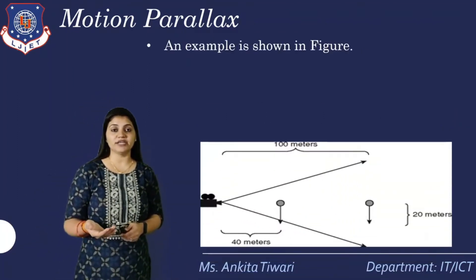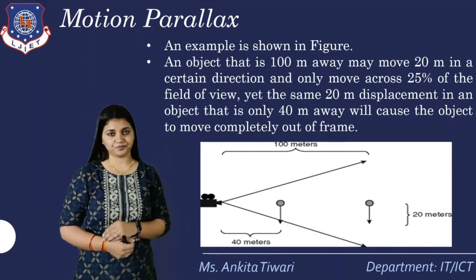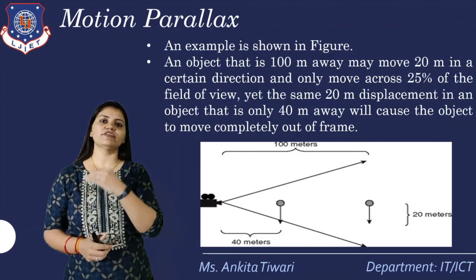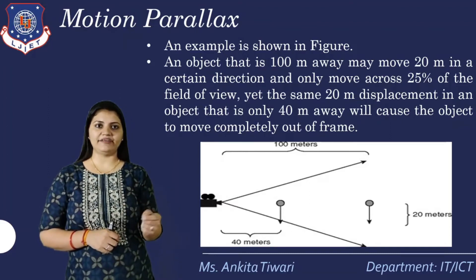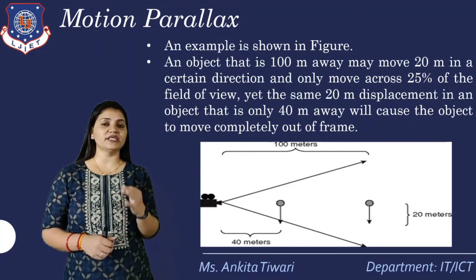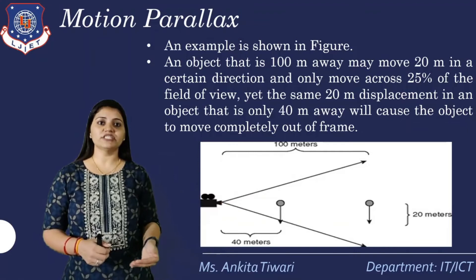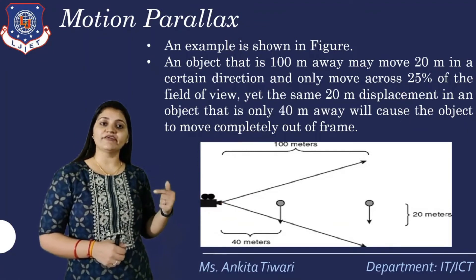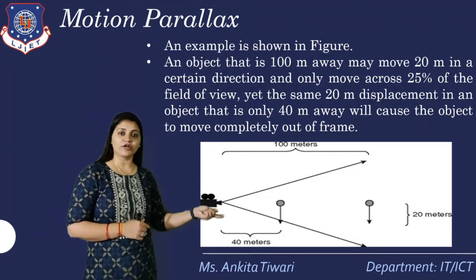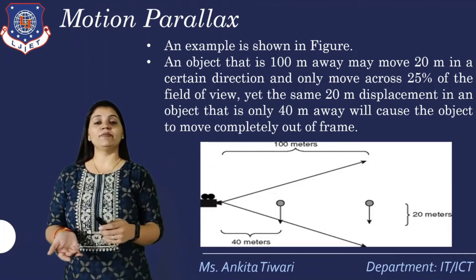When talking about motion parallax, the diagram shows: suppose we have an example where an object that is 10 meters away will move 20 meters in a certain direction and will only move across 25 percent of the field of view — that is, 100 meters total and we are taking 20 meters distance, which means it is 25 percent. Yet the same 20-meter displacement for an object that is only 40 meters away, compared with 100 meters, will cause the object to move completely out of frame — it will go out of bounds if it crosses the given boundary.